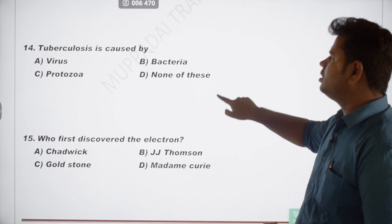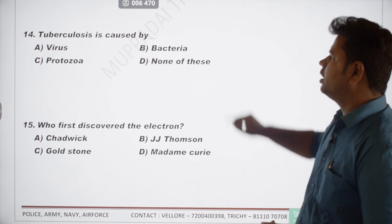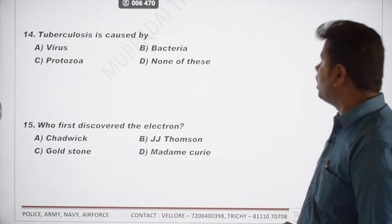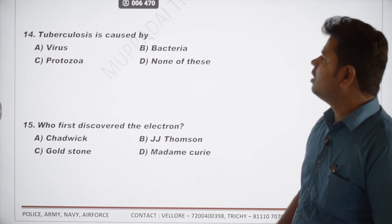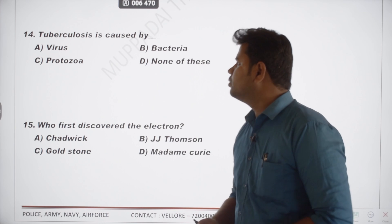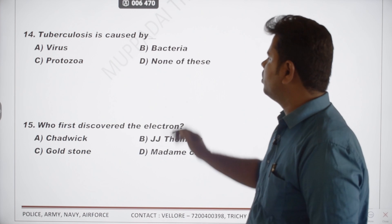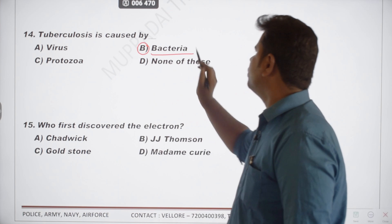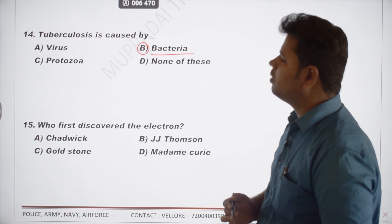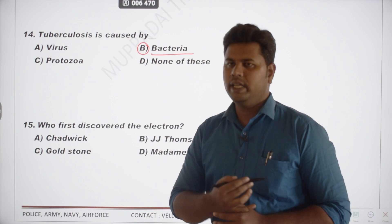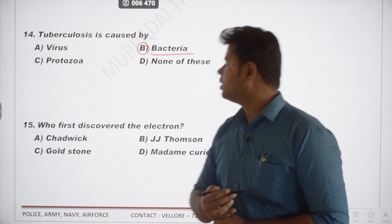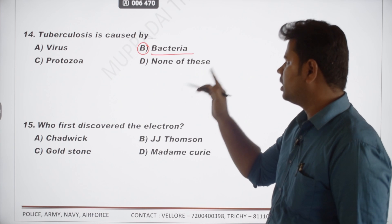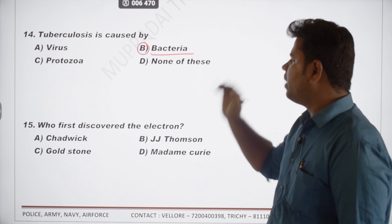The 14th question: tuberculosis is caused by which organism? TB is caused by bacteria. The specific bacterium is Mycobacterium tuberculosis.